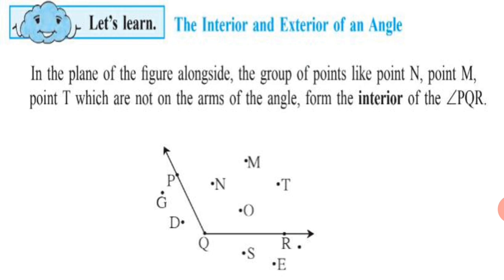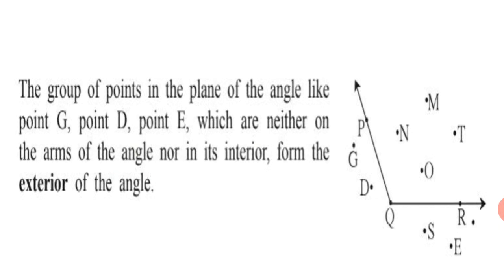Let's see what are points in the exterior. The group of points in the plane of the angle — like Point G, Point D, Point S, Point E — which are neither on the arms of the angle nor in its interior, form the exterior of the angle. So the points in the exterior are Point G, Point D, Point S, and Point E. They lie outside the arms of the angle and hence are called points in the exterior.